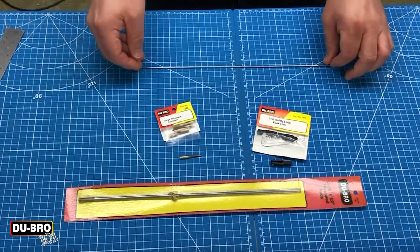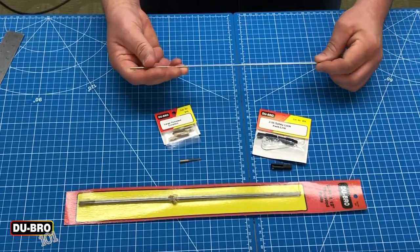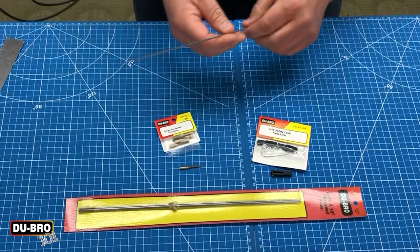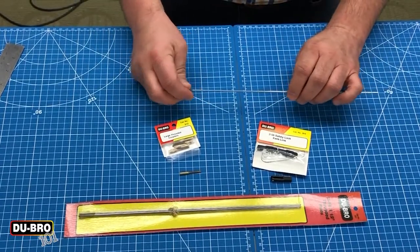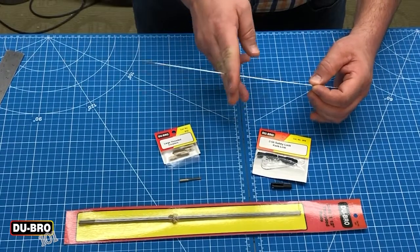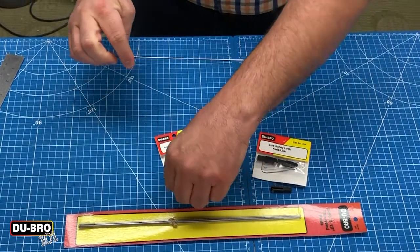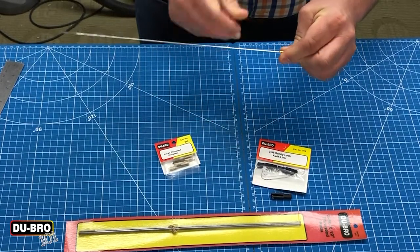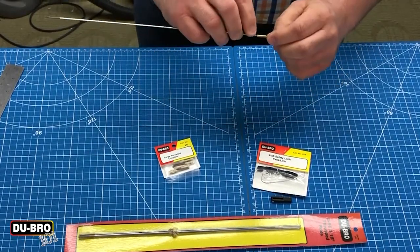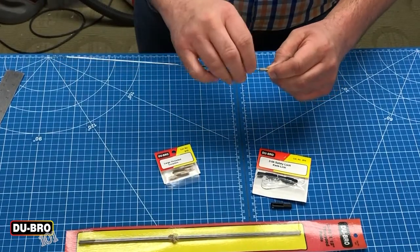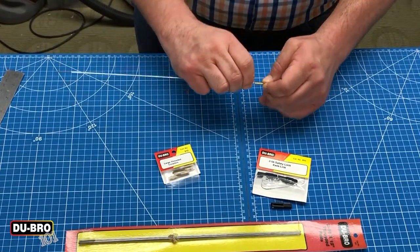For my application, I actually just need a shorter section of threaded rod. Essentially what I'm going to do is measure the distance that I need and cut the rod in order for it to slip into the coupler. Now, what's worth noting about the coupler is that it accepts one centimeter - I know we're using metric - but it accepts one centimeter of push rod, so it's important for you to account for that one centimeter as you do the measuring.